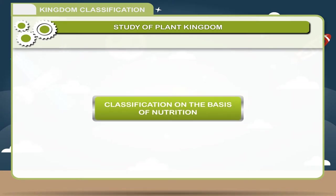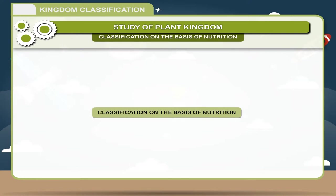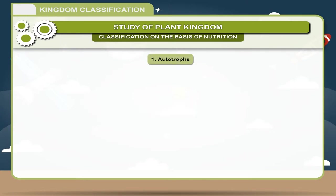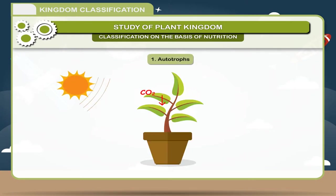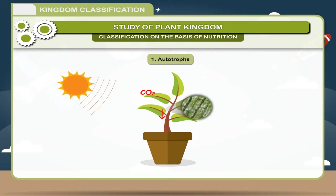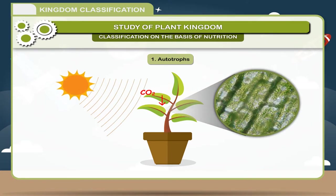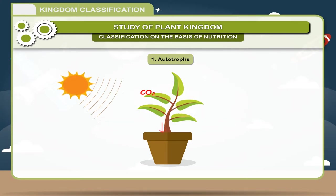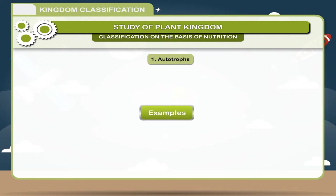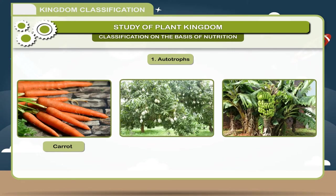Classification on the basis of nutrition: plants are of the following types. 1. Autotrophs — plants which prepare their own food with the help of chlorophyll and sunlight. In this category, all green plants are included. Examples include Carrot, Mango, and Banana.